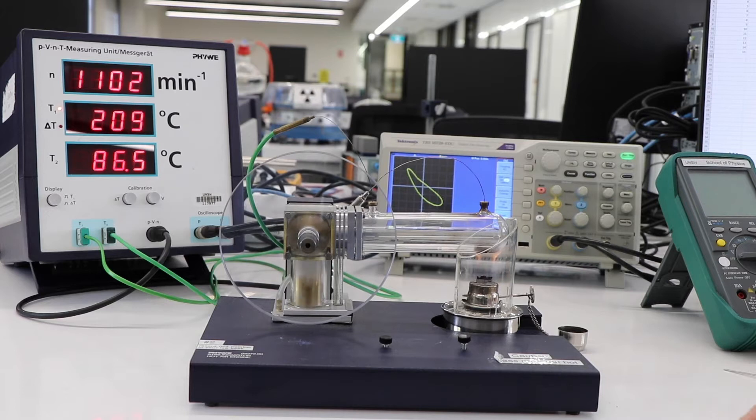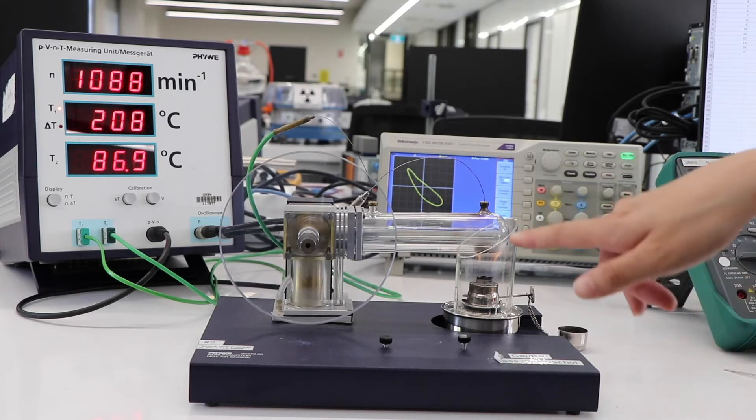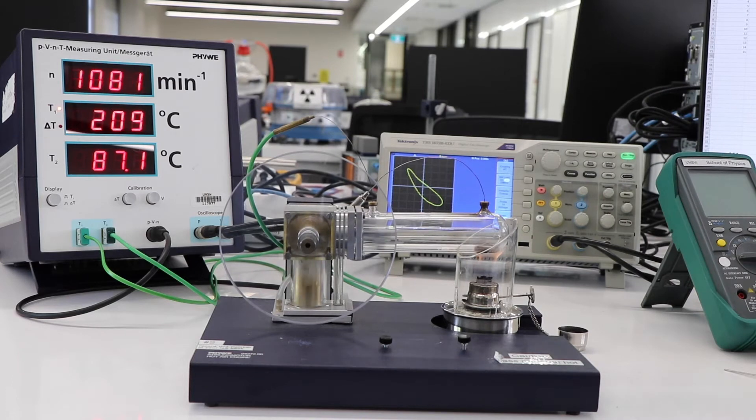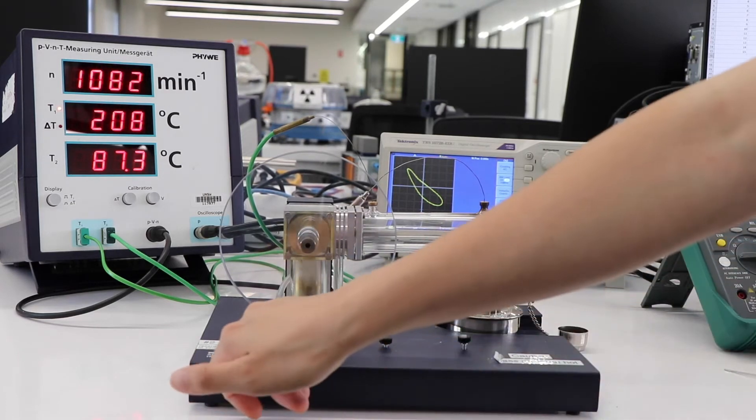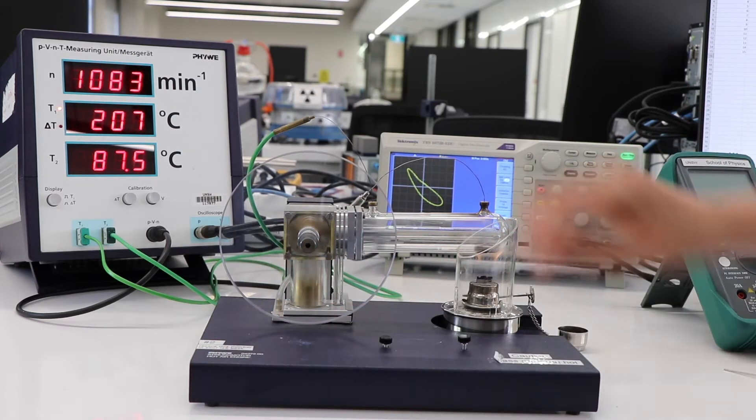So this is the Stirling engine. We've had it set up already. So we have a spirit burner that's using ethanol. This is your main chamber and this is what T1 is the measurement for. And T2 is the temperature for the smaller chamber underneath. So right now we have it turning clockwise.